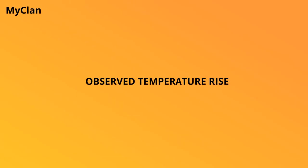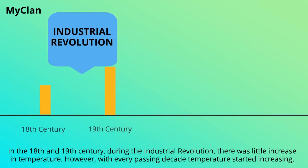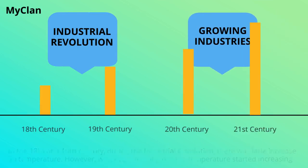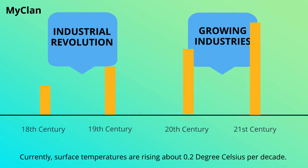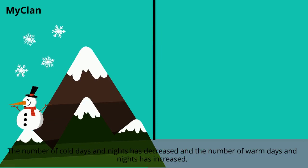Observing the temperature rise: in the 18th and 19th century during the industrial revolution, there was little increase in temperature. However, with every passing decade, temperature started increasing. Currently, surface temperatures are rising about 0.2 degrees Celsius per decade.